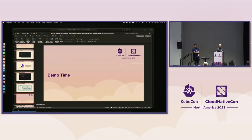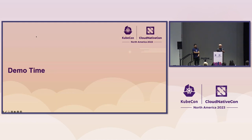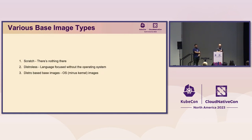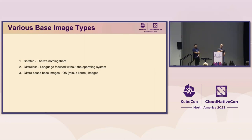Let me come back to the presentation and dig into base container images. A base container image — from the Docker glossary — is the image that has no parent image. It's the foundation for what you're going to use. There are various types: scratch has nothing in it, great for Go applications where you don't need another tool. There's distroless, which has just an OS without a specific distro. And there are ones based on an operating system minus the kernel — Debian ones, Ubuntu ones, and so on.